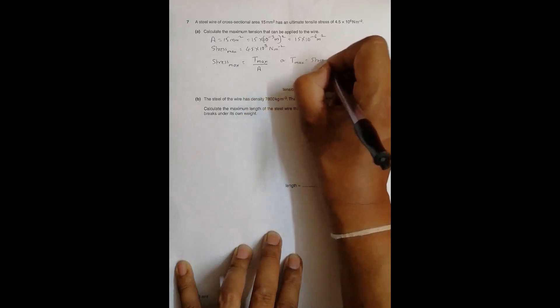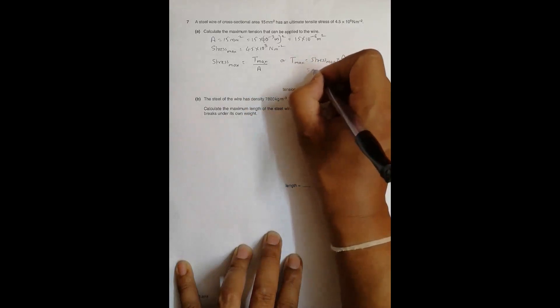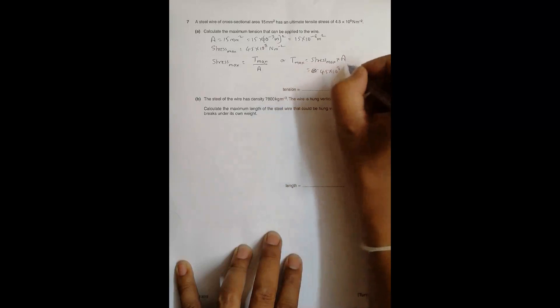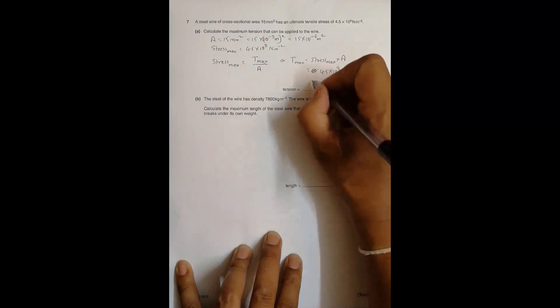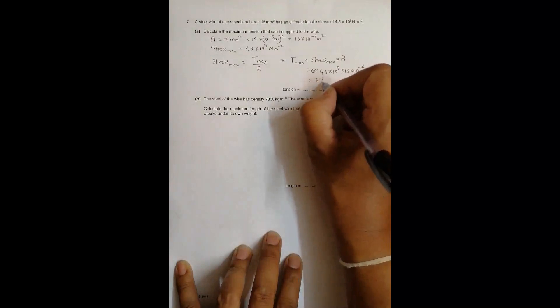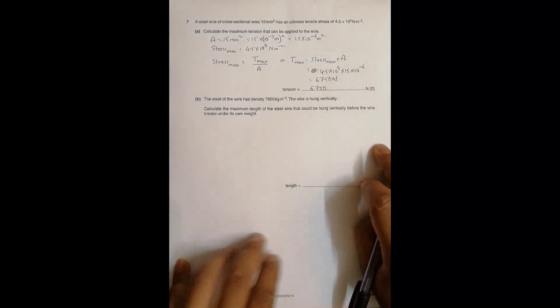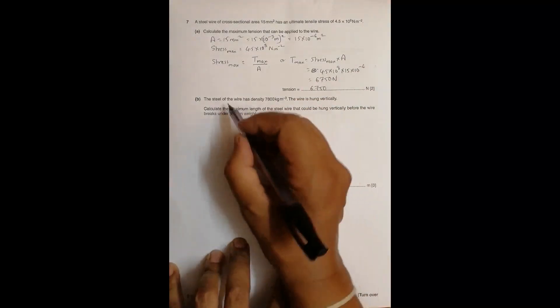So T max should be equal to stress max times area. That's equal to 4.5 times 10 to the power 8 times 15 times 10 to the power minus 6. So when I use the calculator, its value will be equal to 6750 Newton.